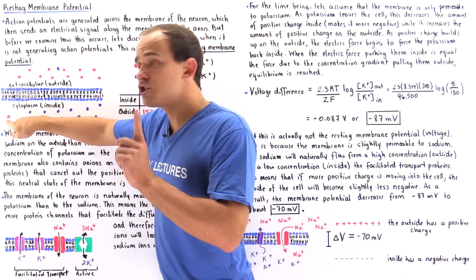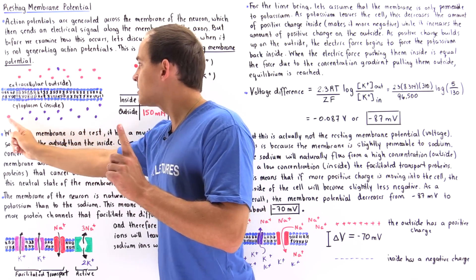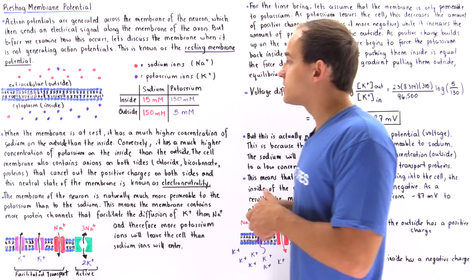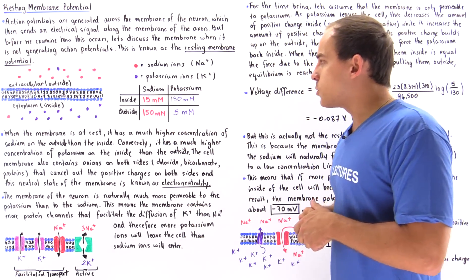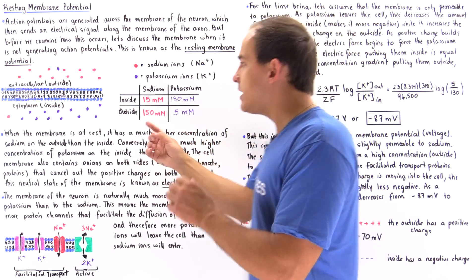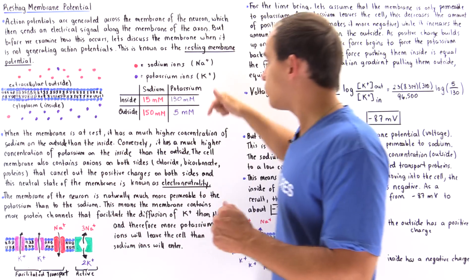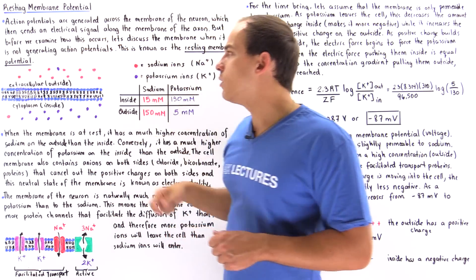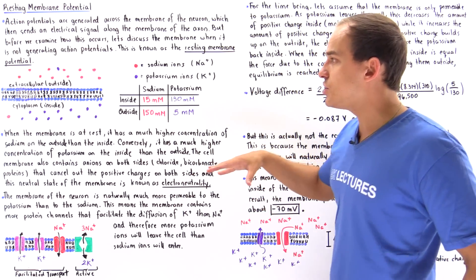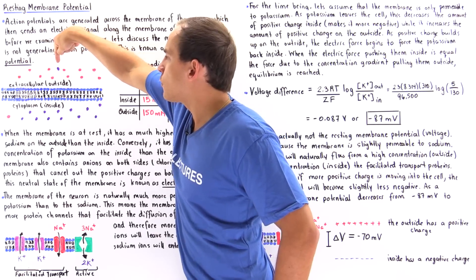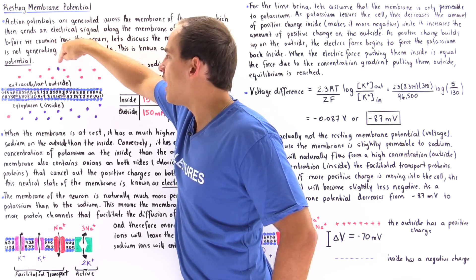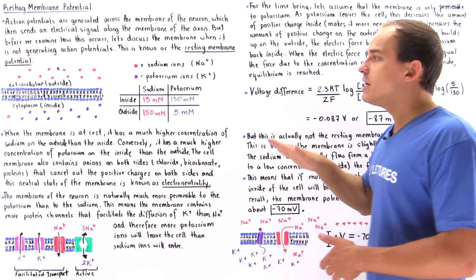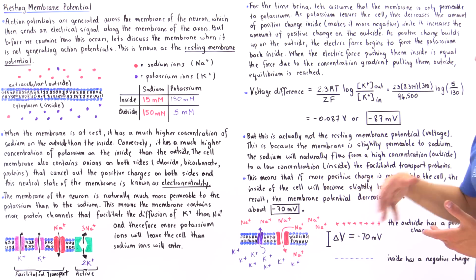So for every one sodium we find on the inside, we have 10 sodium ions on the outside. For potassium, it's the opposite — we have more on the inside: 130 millimolar versus only 5 millimolar on the outside. The ratio is 26 to 1, meaning for every one potassium on the outside, we have 26 potassiums on the inside of the resting membrane.